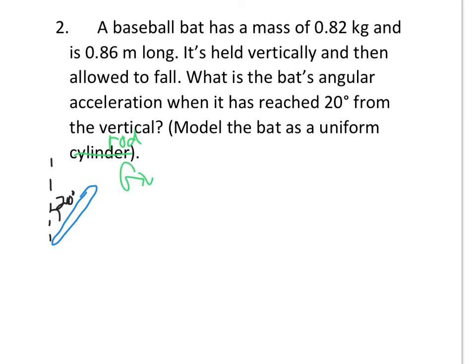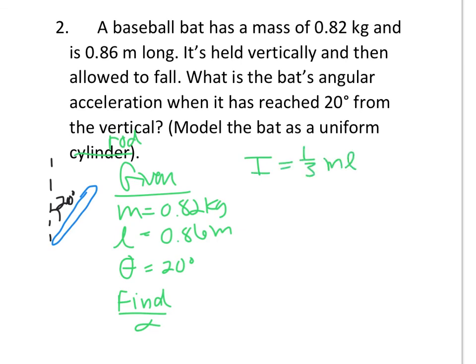So listing my given information. The mass of the baseball bat is 0.82 kilograms. The length of the baseball bat is 0.86 meters. It's held vertically and allowed to fall. Theta is 20 degrees for the same reason it was 20 degrees in the last problem. And we are looking for, once again, angular acceleration. I'm going to solve this one with a little bit less numbers and see how things substitute in and cancel out just so that you can see it is possible. So we know a cylinder or a rod being rotated about its end. Moment of inertia is one-third ml squared.